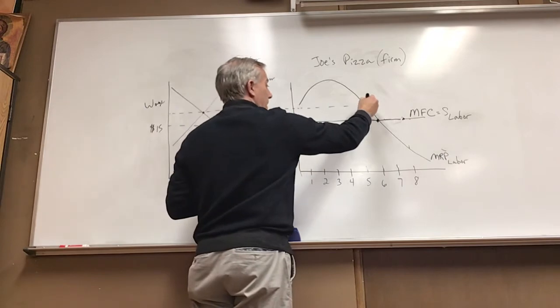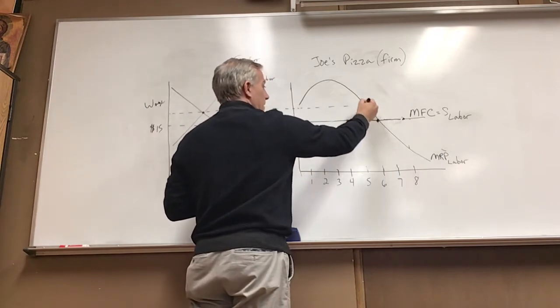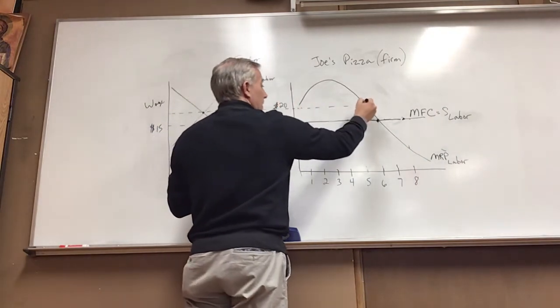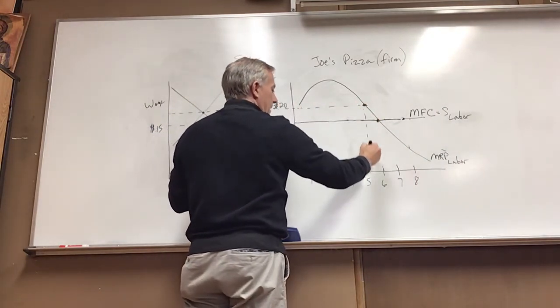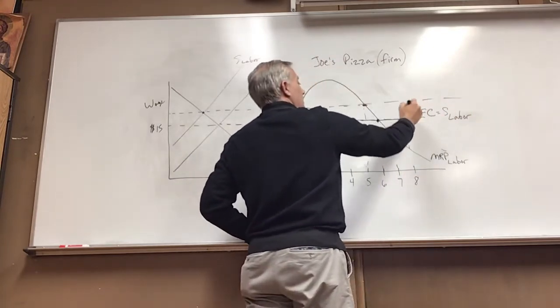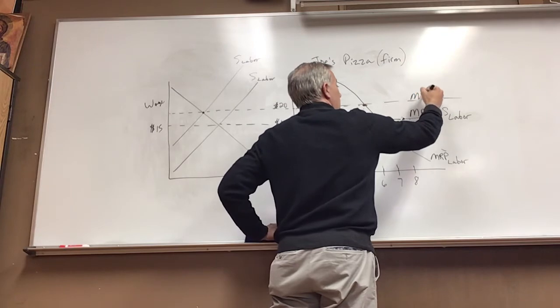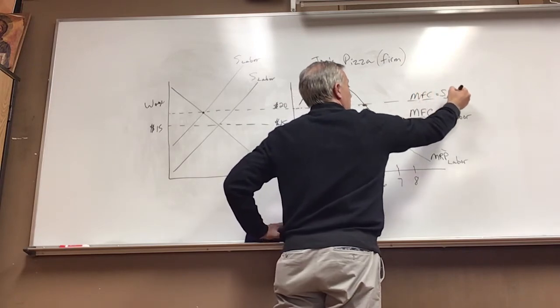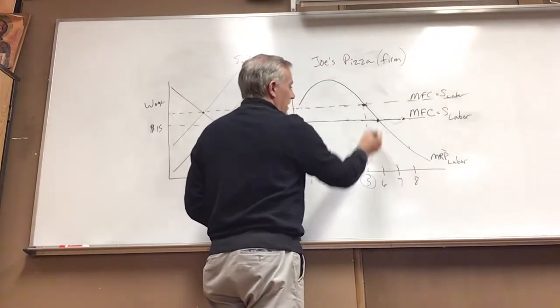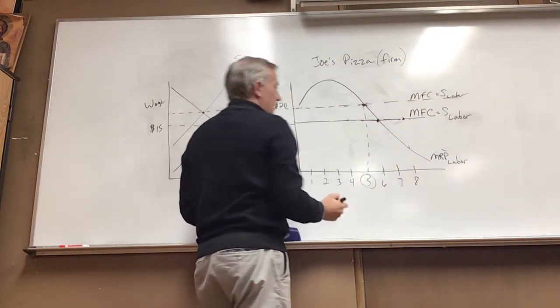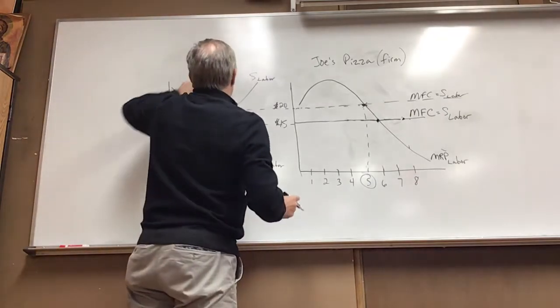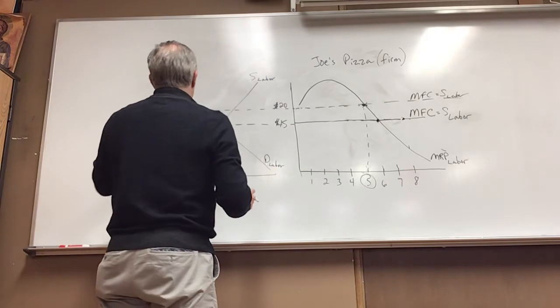And now I have a different intersection. The wage went up to, we'll say, $20. And now what does that mean? It means I hire one fewer employees and I'll extend this out forever so we know that this is the new marginal factor cost supply of labor. Here's our new intersection. I'm now hiring five employees instead of six employees.